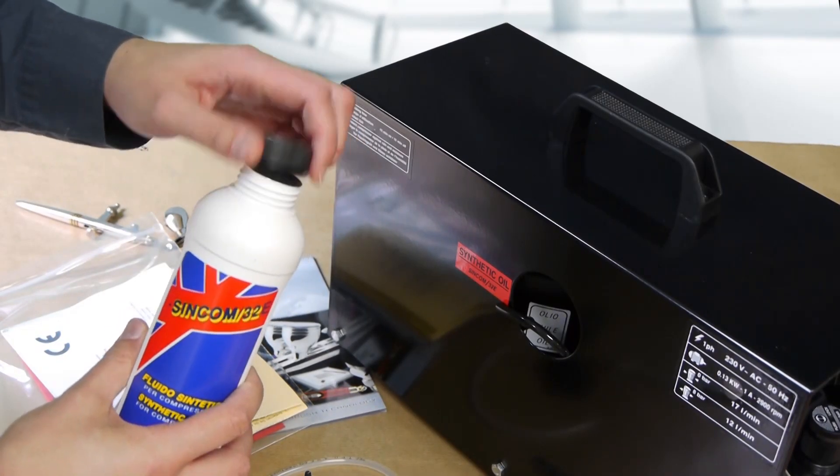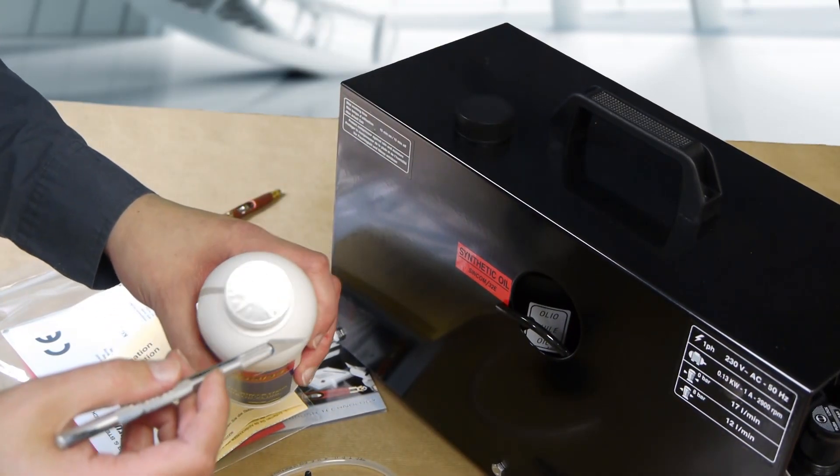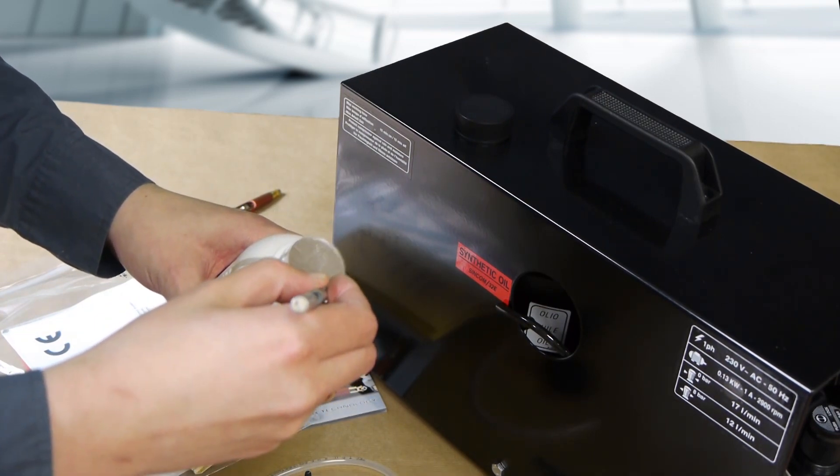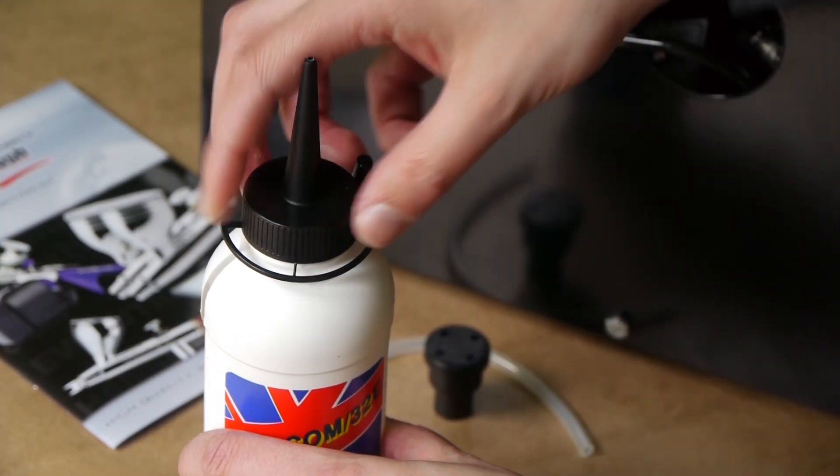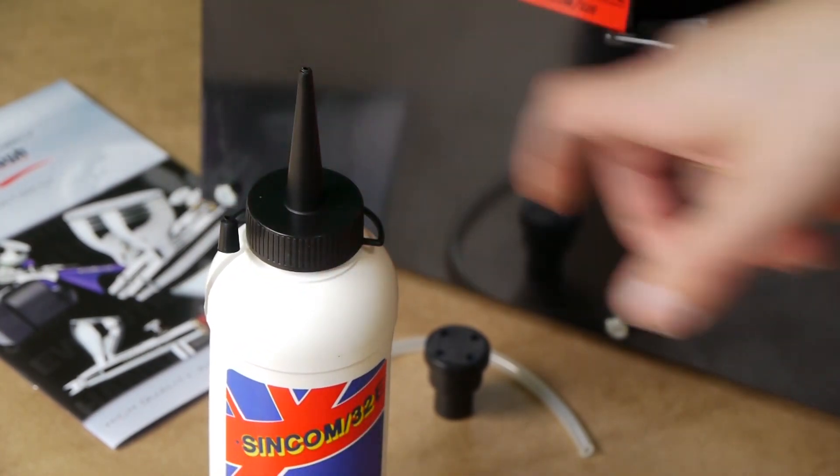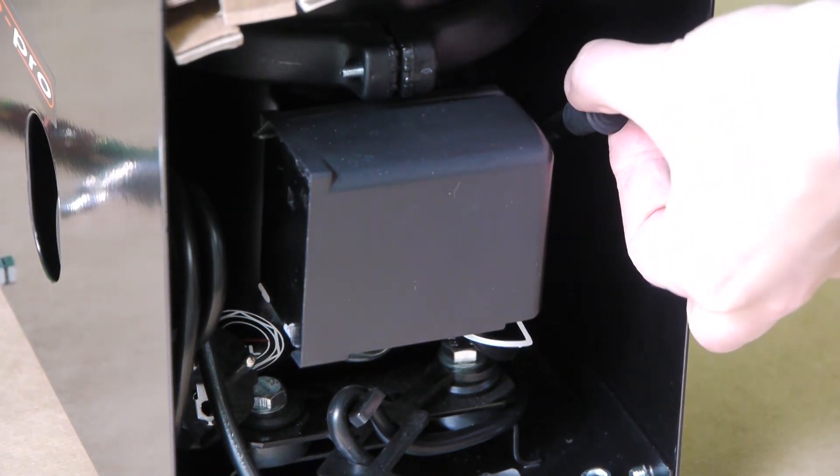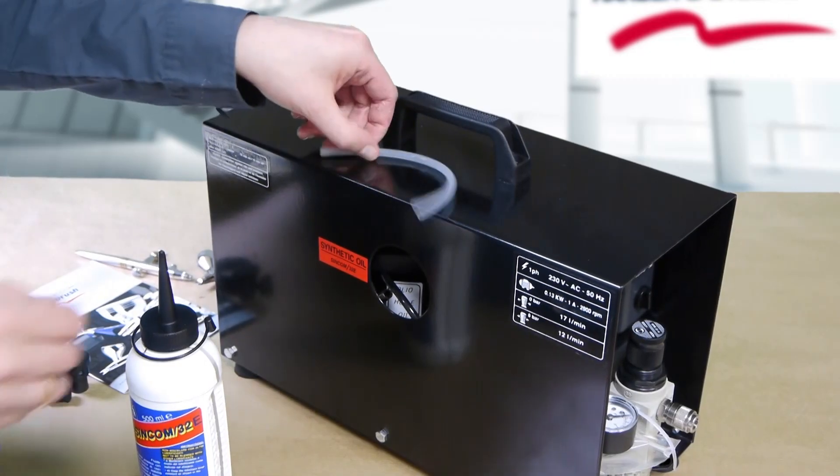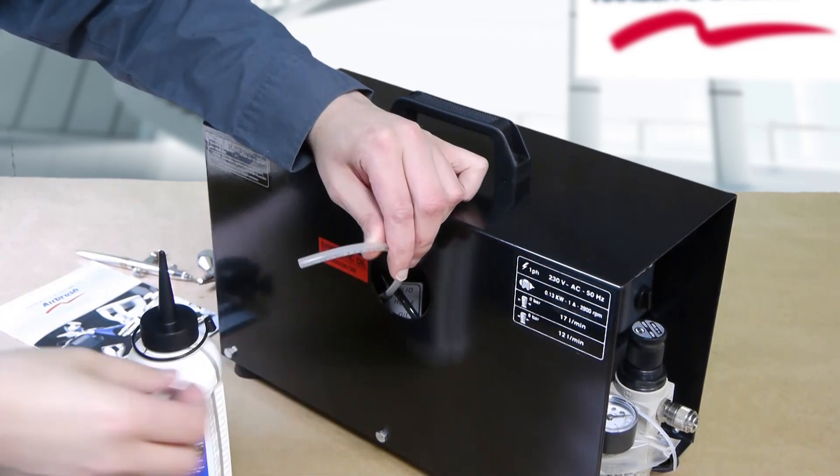Remove the cap from the intake socket. Now, place the transparent hose connected to the oil bottle into the filler pipe and pour in the oil.